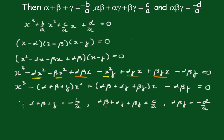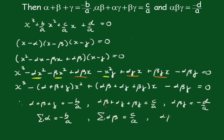Another way of writing this — particularly when we go on to the power-four ones — rather than writing it out in full, you can use sigma notation: sigma(alpha) = -B/A, sigma(alpha·beta) = C/A. That just saves writing out each time. And of course alpha·beta·gamma = -D/A.